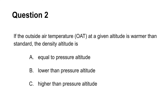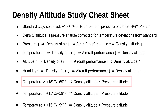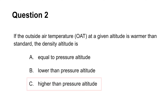The second question asks how outside temperature that is warmer than standard will affect the density altitude. Because ambient temperature higher than the standard day temperature of plus 15 degrees Celsius or plus 59 degrees Fahrenheit will decrease air density, this will lead to a decrease in aircraft performance and will produce a density altitude that is higher than pressure altitude. Thus, the answer is C.